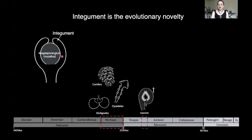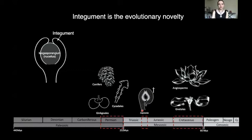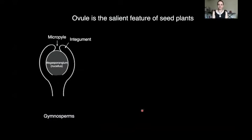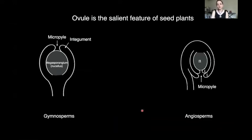There are also some fossil lineages that have been very difficult to classify, for example Caytonia, but they provide evidence for the subsequent evolution of Bennettitales and angiosperms during the Cretaceous. All of these lineages have ovules and seeds, but there is still a lot of morphological diversity. Most gymnosperms have only one integument and orthotropous orientation, with the micropyle located opposite to the stalk, whereas most angiosperms have two integuments and anatropous orientation as the result of asymmetric growth of the outer integument.